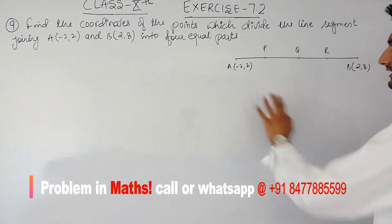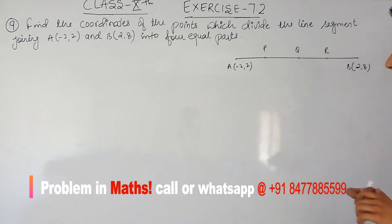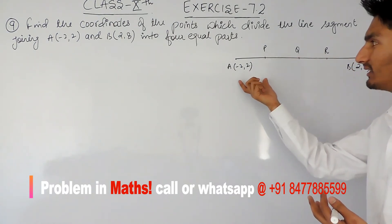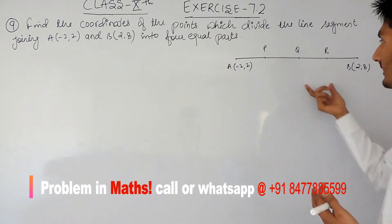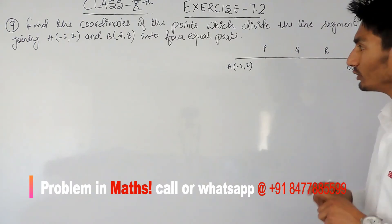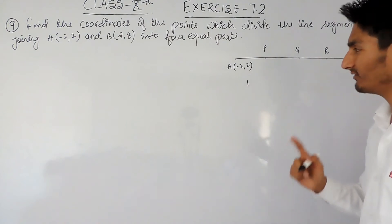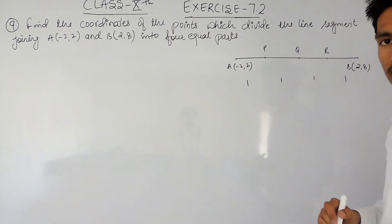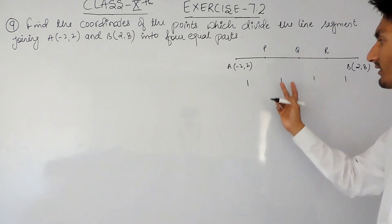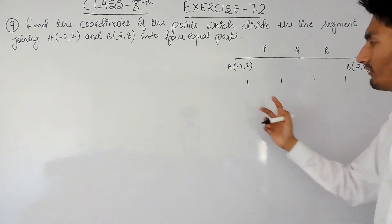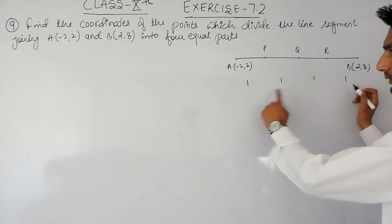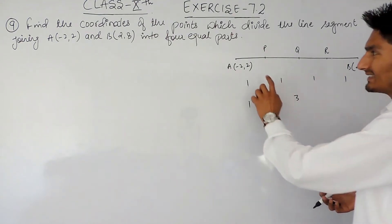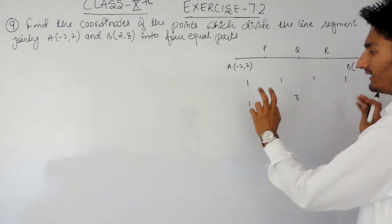Now, if these three points divide this line into four equal parts, that means the distance between each line segment is equal. If I consider the distance between two consecutive points as one unit, then each adjacent segment is one unit. So the distance between the first point and B will be one unit to three units remaining — meaning this point divides the line segment in the ratio 1:3.